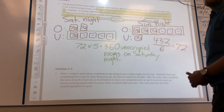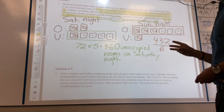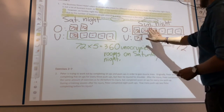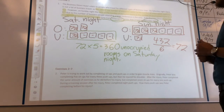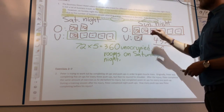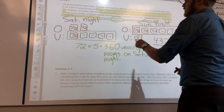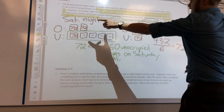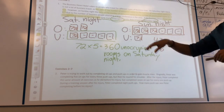Just like the last videos, problems will always give you one of three types of information: one individual piece, the difference between two pieces, or the total. The only real difference here is having two tape diagrams instead of one. I really encourage making sure you label everything — definitely label Saturday night and Sunday night so you don't confuse the two diagrams.